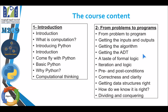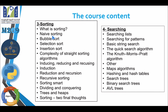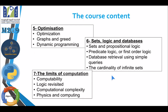Looking at the course structure, the introduction covers Python basics and computational thinking, then we move to algorithms covering conditions and strategies. In the third part we cover sorting — many different types of sorting algorithms. Then searching algorithms in various types. In the fifth subject we cover optimization and dynamic programming. In the sixth subject we cover sets, logic, and some basic database queries. Finally, we talk about computation and the limits of computation.